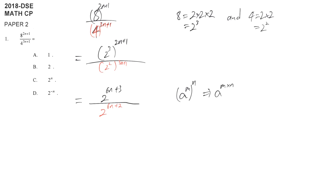Now we apply the division rule: a^m divided by a^n equals a^(m-n). So we have 2 to the power of (the numerator power minus the denominator power), which is (6n+3) minus (6n+2).